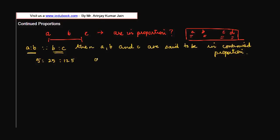then A is to B. So what is my A here? My A is basically 5, B is equal to 25, and C is equal to 125. So if these three are in continued proportion, then 5 is to 25 should be equal to 25 is to 125.